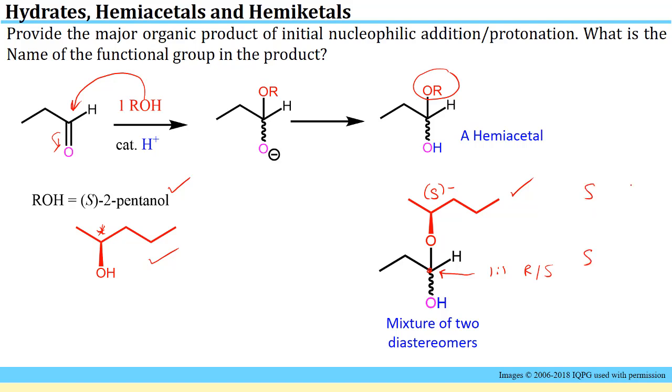We will have the SS isomer and the SR isomer. Those are diastereomers. So we have a mixture of two diastereomers.